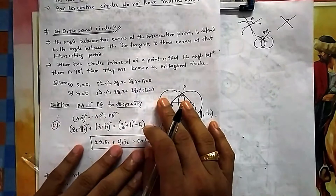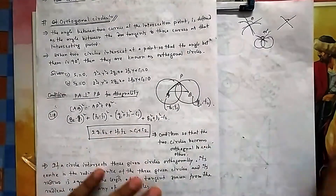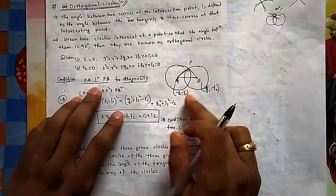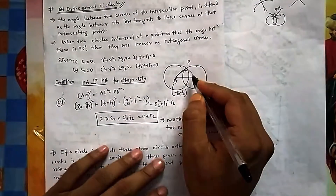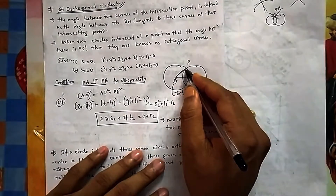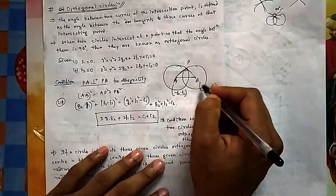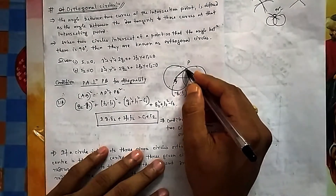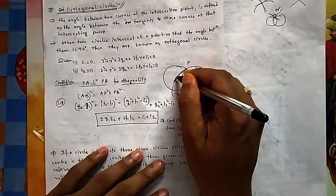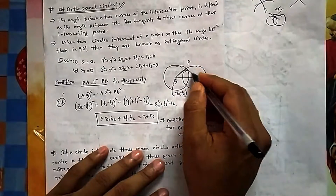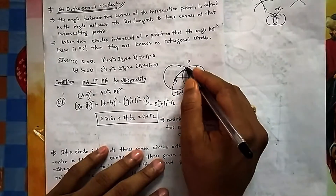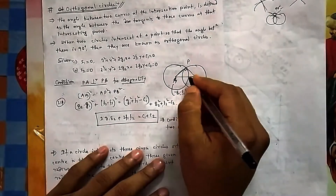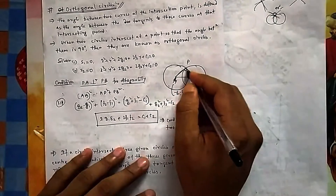Now we will derive the condition of orthogonality — when we say two circles are orthogonal. Suppose two circles are given and they have an intersecting point. Because the tangent at that point must be 90 degrees, you join the two centers to that intersection point. Both these lines pass through the centers, and both angles are 90 degrees, which you can also verify by simple geometrical logic.